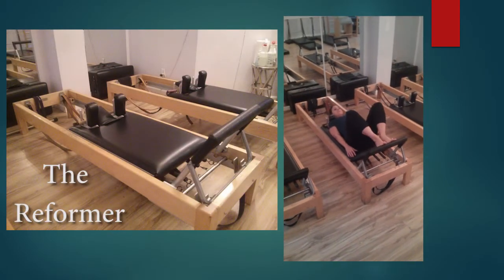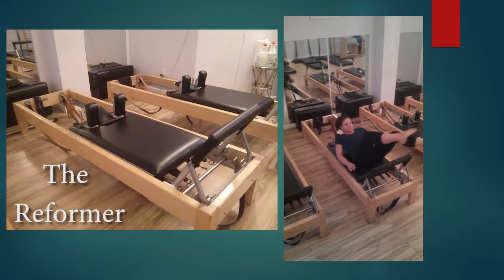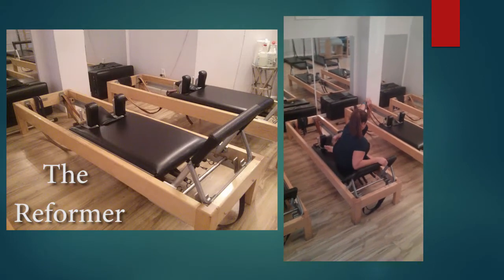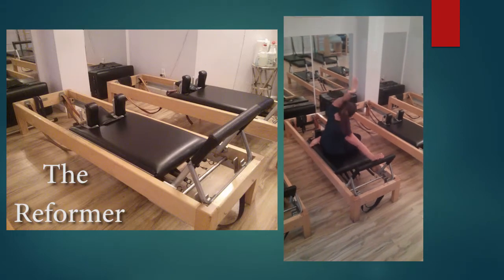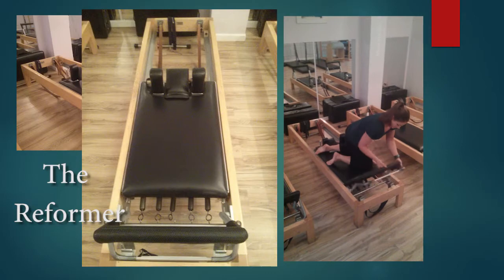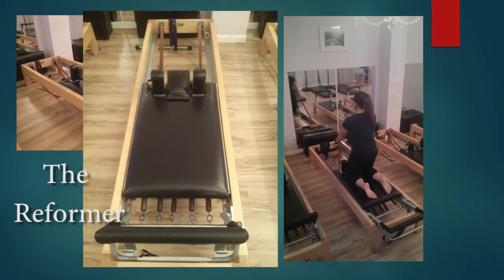The Pilates reformer is the most well-known piece of apparatus. It is built on a wooden or metal frame that is rectangular shaped to mimic the frame of the body. The carriage glides along on the frame against spring resistance. Joseph Pilates described the springs as muscles. They help the movement. Less springs equals less help and more springs equals more help.